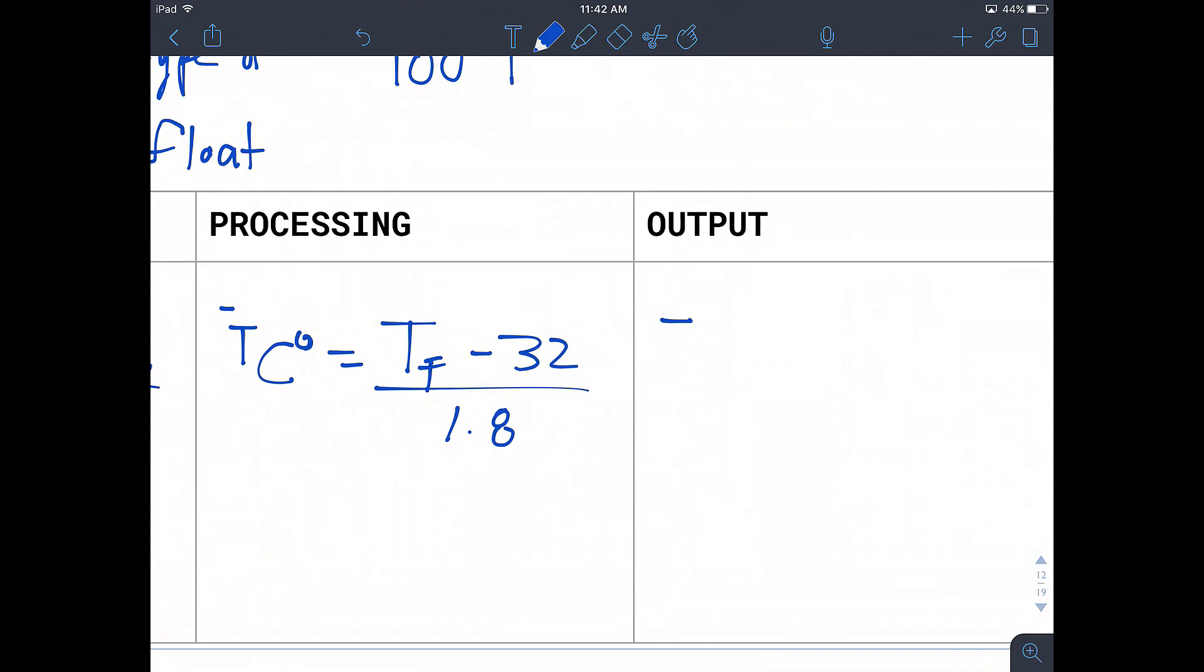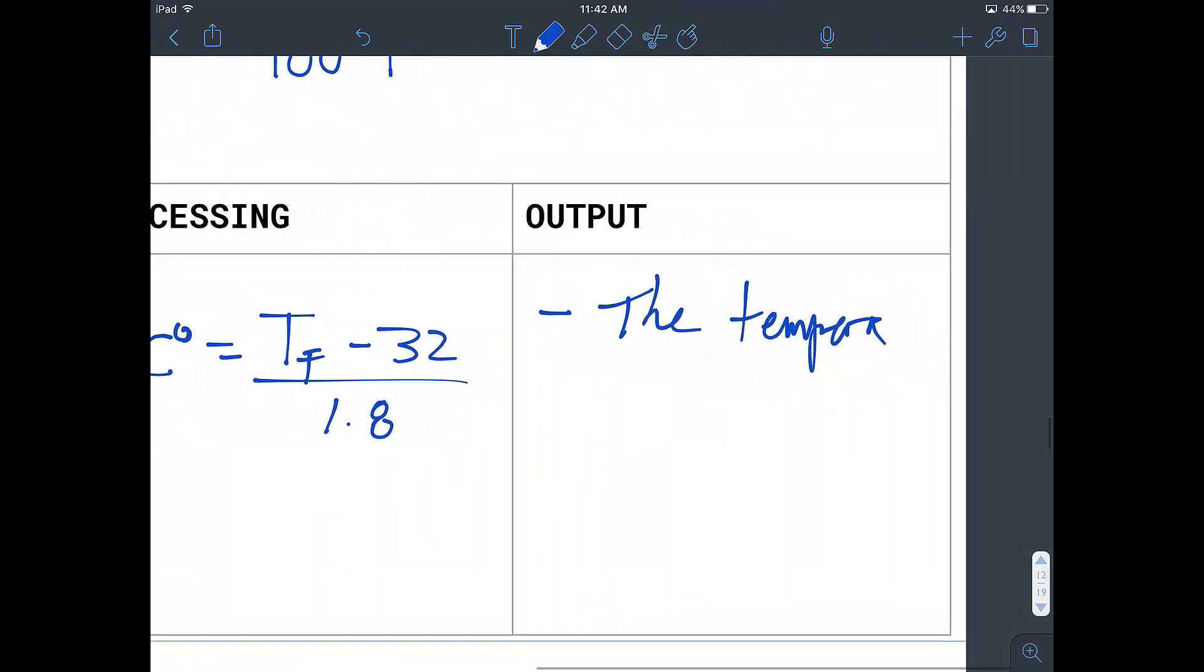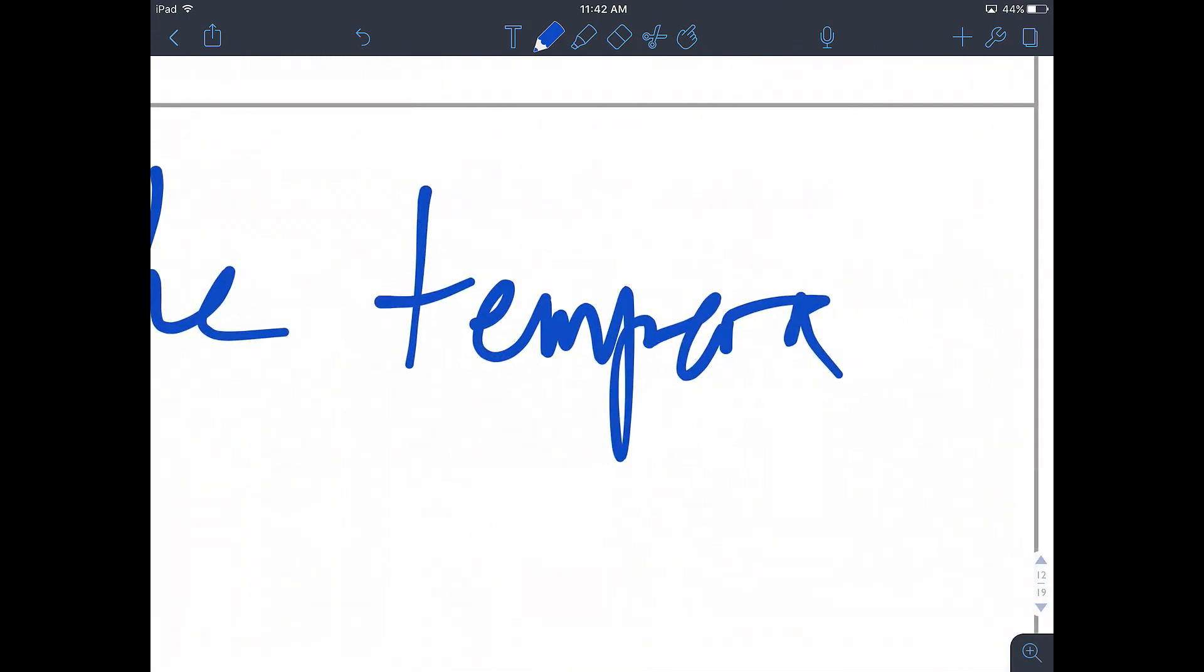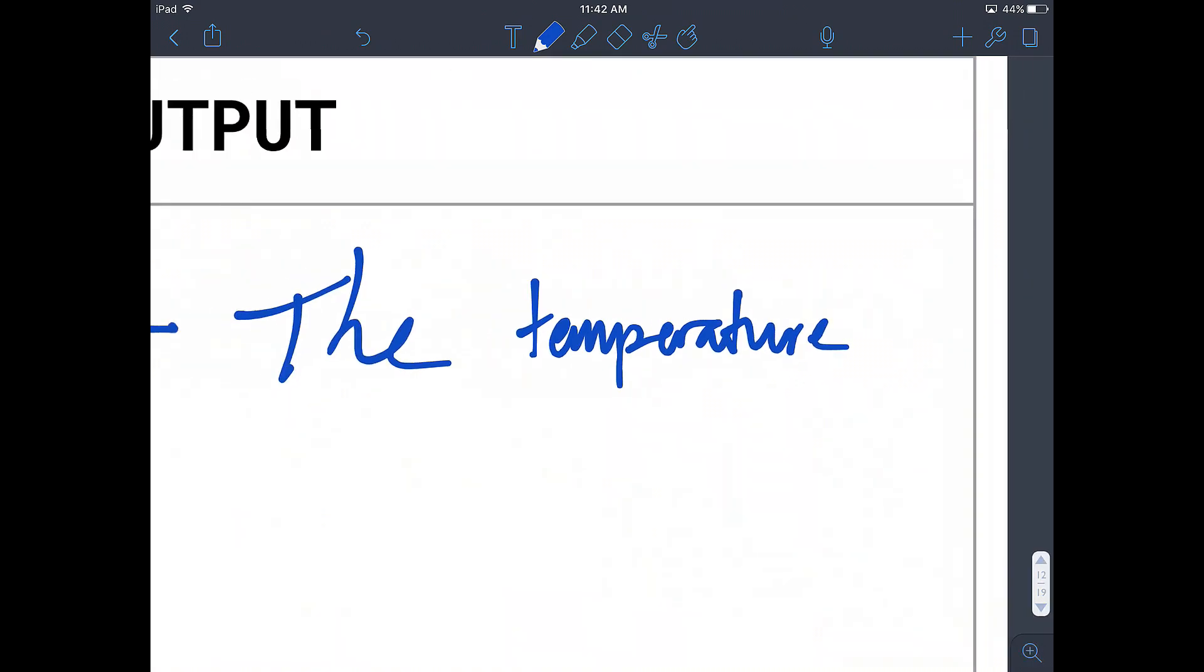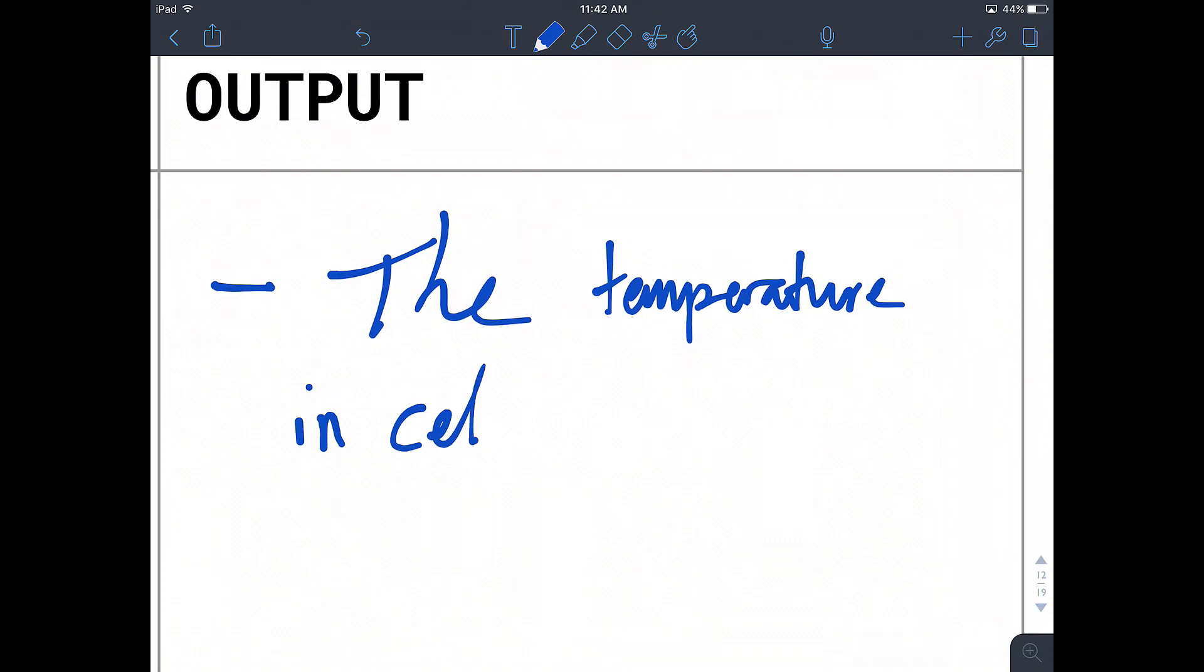Then we need to just output the temperature. The temperature in Celsius is our result, which can be found from our processing.